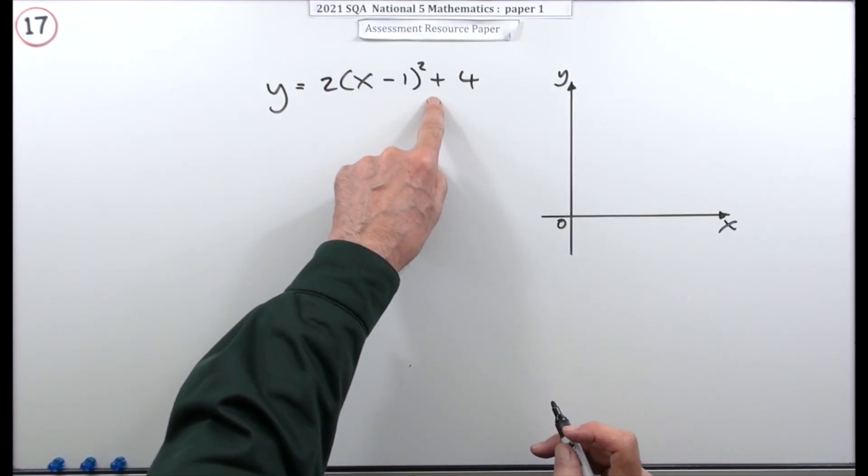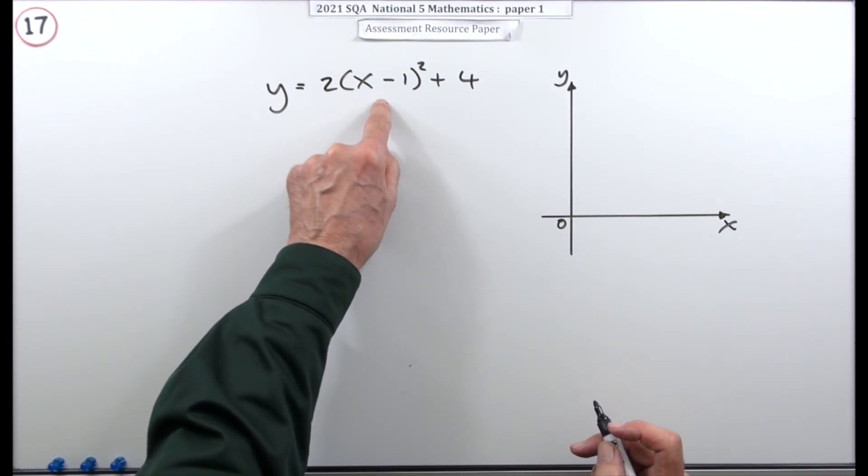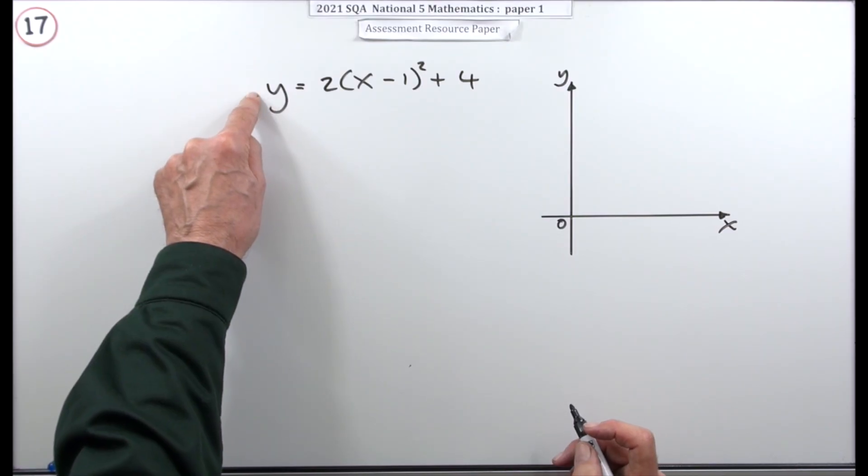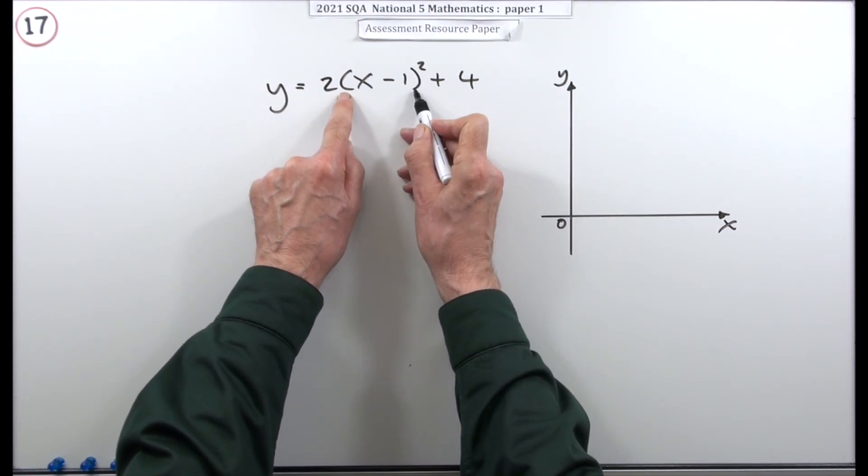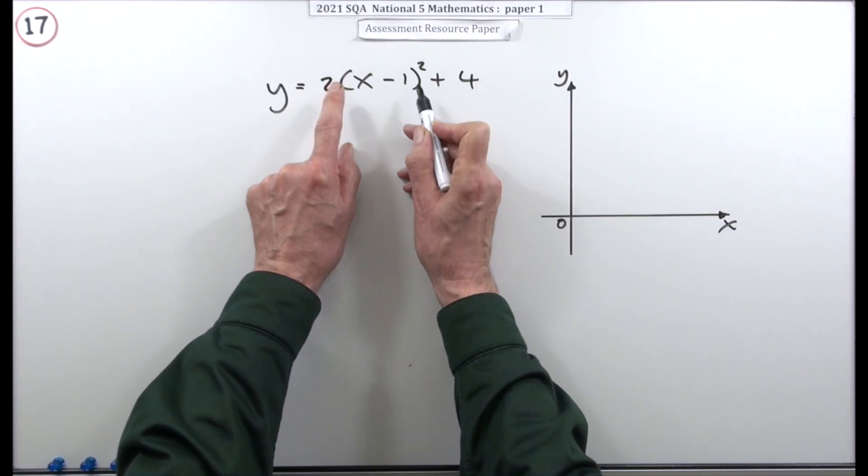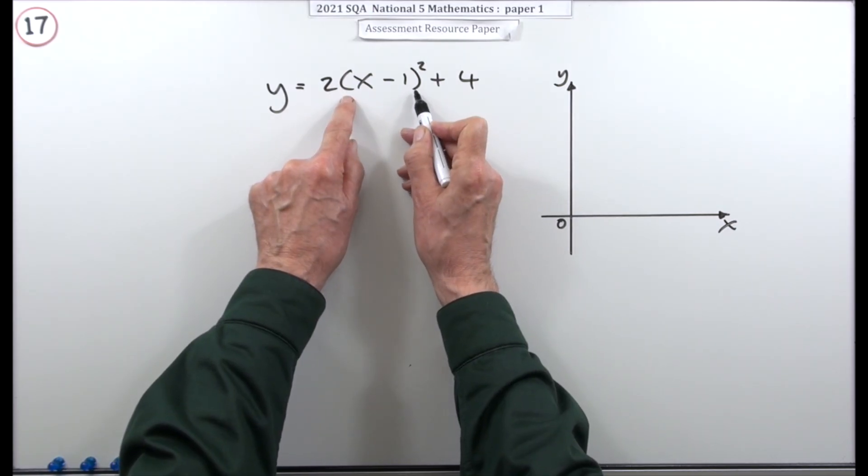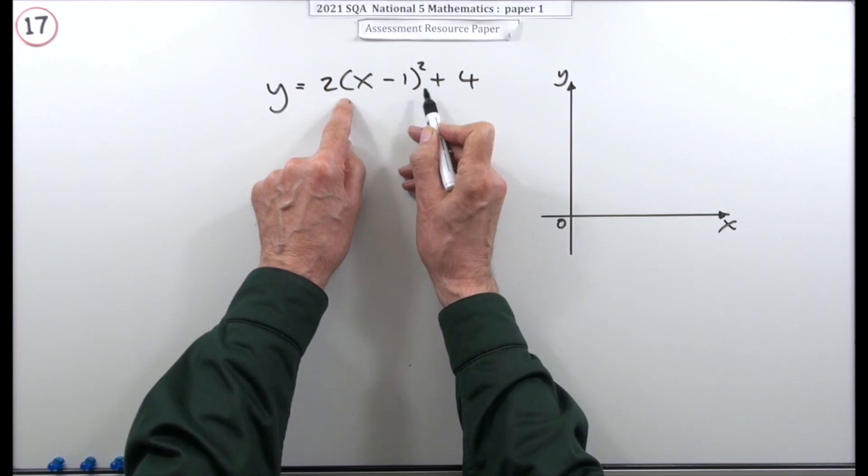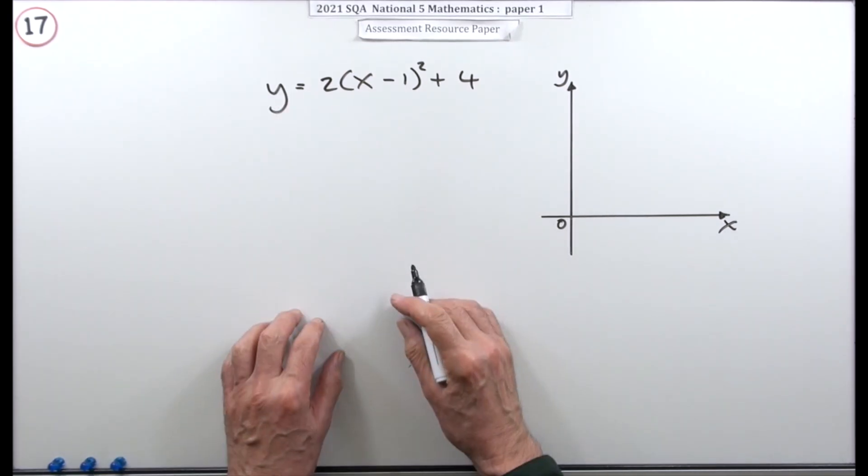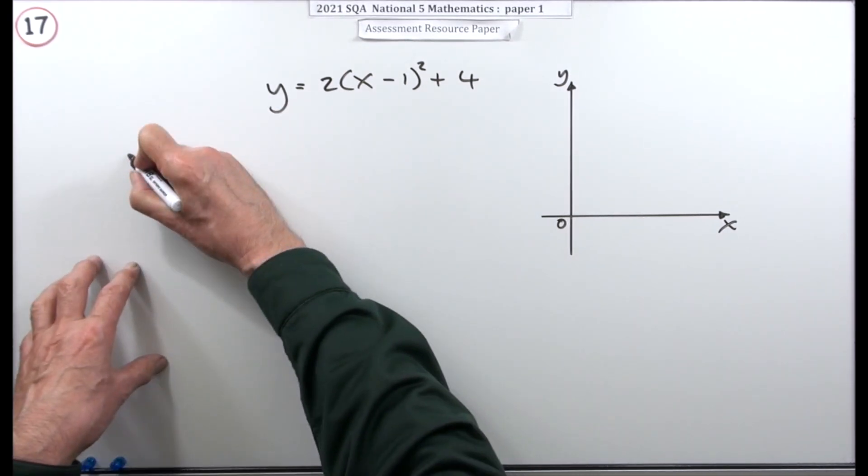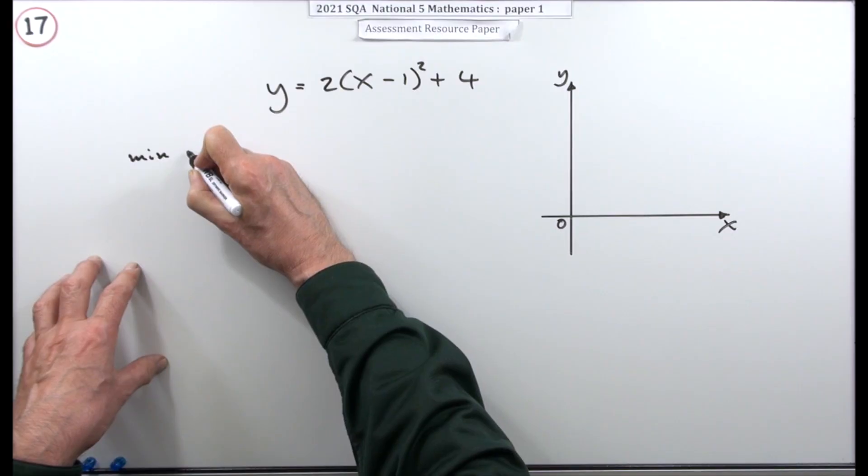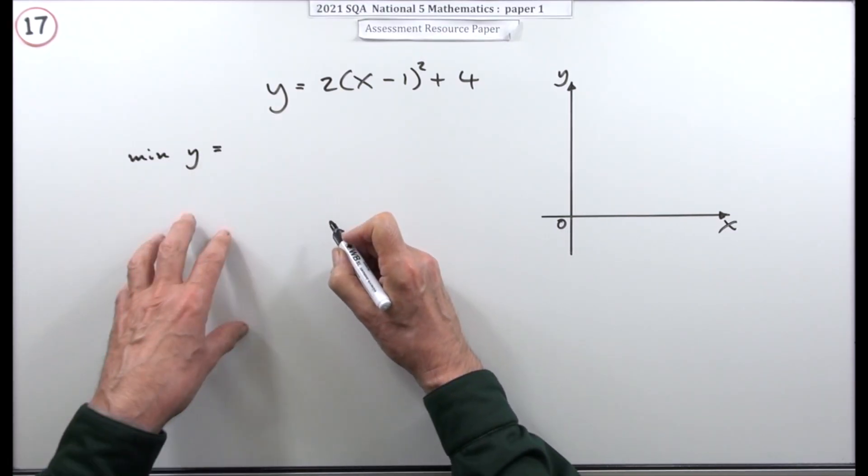Now what this does tell you is this will give you the lowest that y will ever get to. Because when you square a bracket, if you square a bracket you can't get a negative answer. The lowest answer that bracket can ever give you is 0. In which case the lowest value of y would be 0 and 4 is 4. So the lowest y is ever going to get to is 4. But I can state that this way. The minimum value of y is going to be 4.